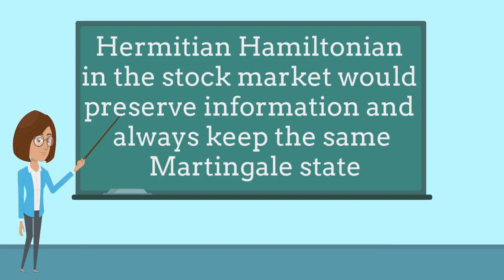In fact, we can conclude that if the Hamiltonian describing the evolution of the stock market is Hermitian, then it would certainly preserve the information and as a consequence would always keep the same martingale state. Then no random fluctuation would affect the equilibrium condition in such a case.